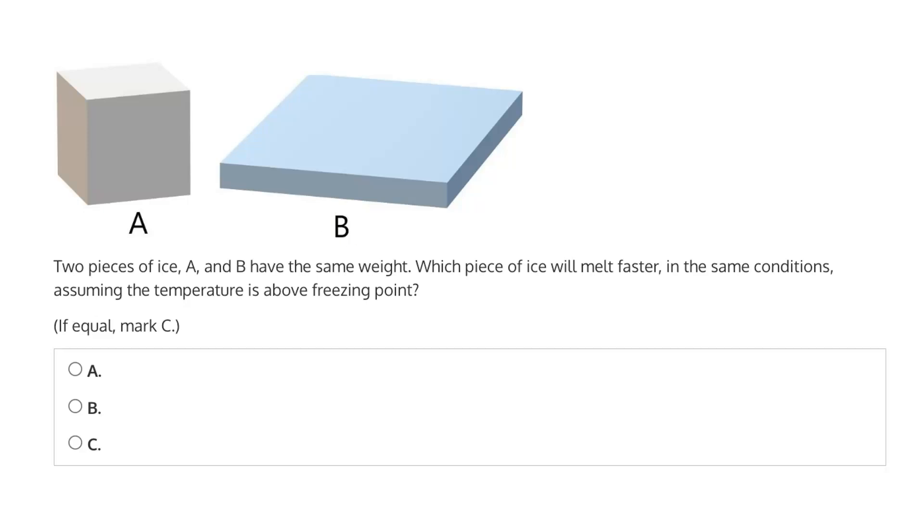So before continuing further about that, let's consider what we know about heat. We know that heat diffuses. It goes from an area of high concentration to low concentration, or in other words, it will go from a hot body to a cold body.